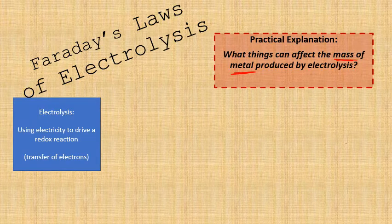Electrolysis is using electricity to drive a redox reaction, which involves a transfer of electrons. If we want to manipulate this reaction, we need to think about what we can do to allow either more or less electrons to go onto a particular species and thus be reduced or oxidised at the cathode or anode.